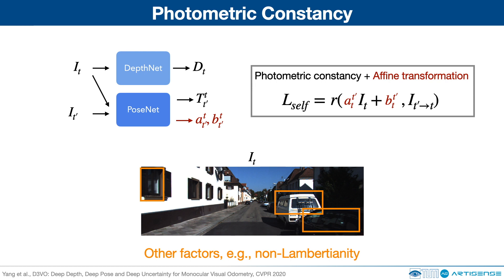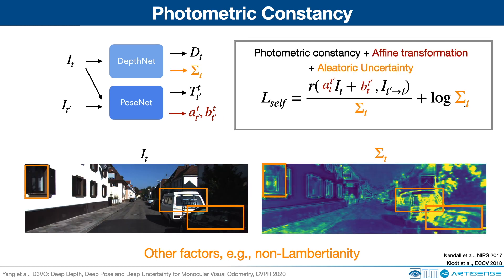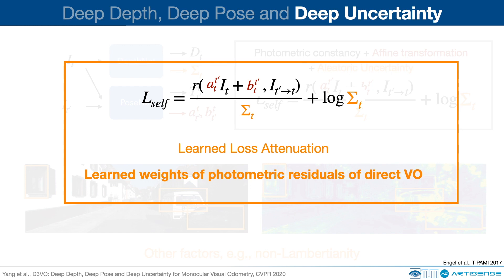However, only modeling the illumination change is not enough to capture all failure cases of the photometric constancy assumption. Other cases, for example, non-Lambertian surfaces like the windows on the image can also violate the assumption but are hard to model explicitly. Therefore, we leverage the concept of aleatoric uncertainty, which we name sigma, to model the other factors which violate the photometric constancy. The result on the bottom right shows that the network is able to predict higher uncertainty on the reflective windows. The predicted sigma can be seen as the learned loss attenuation which makes the learning process more robust to noisy labels. In fact, sigma can also be interpreted as the learned weights of the photometric residuals in direct VO. Therefore, we integrate the uncertainty into direct sparse odometry by replacing the original weighting function with the inverse of the learned uncertainty.